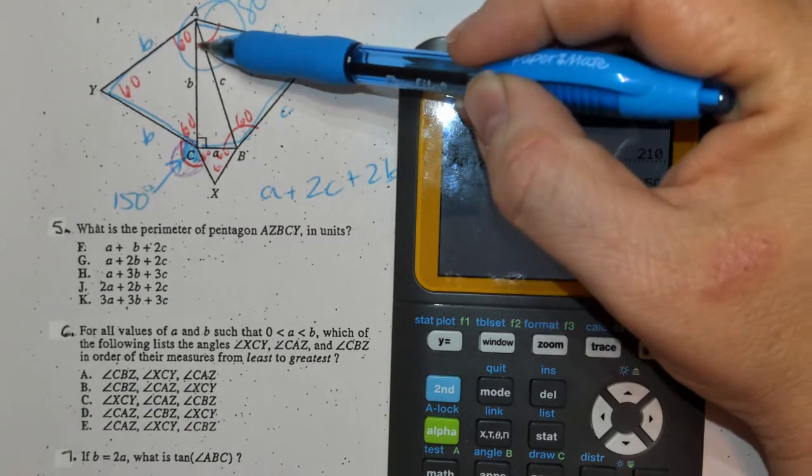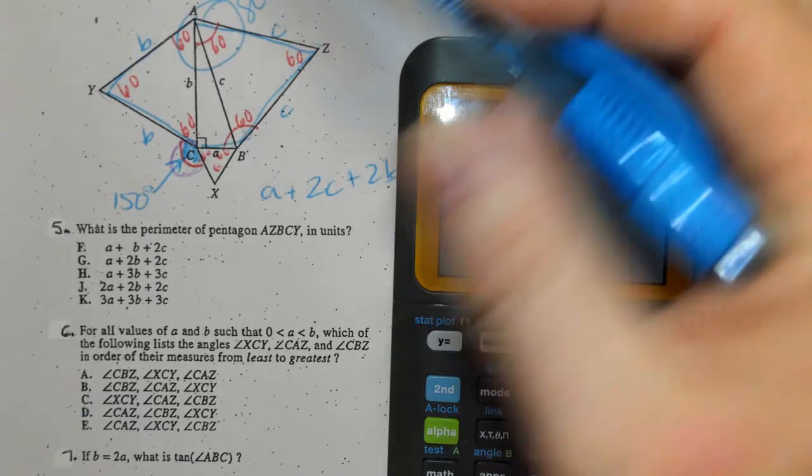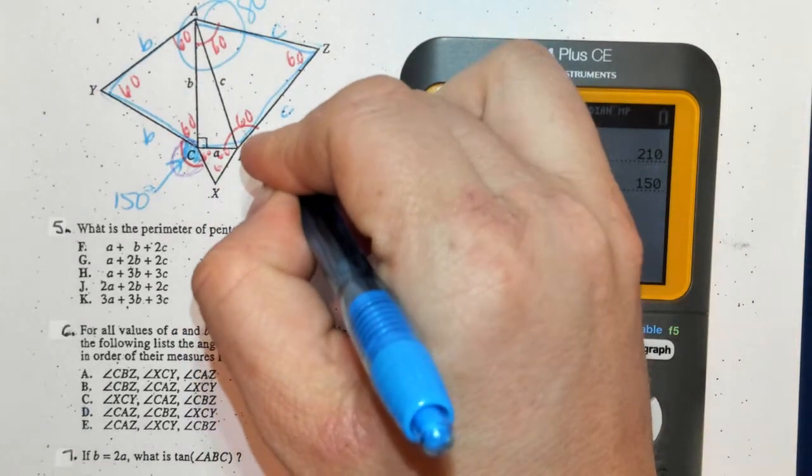So if I assume this is 20° and these two angles have to add up to 90°, this would be 70°. 70° and 60° gives you 130°.